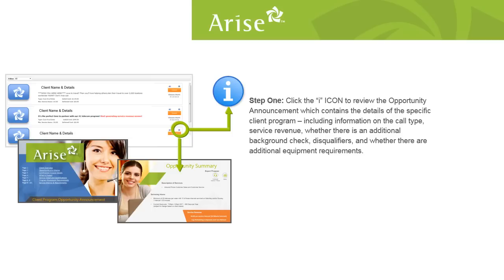What's the first step? The first step is to click the eye icon to review the opportunity announcement. This is a PDF that contains the details of the specific client program. The opportunity announcement will provide you with all of the information you need, including information about certification.